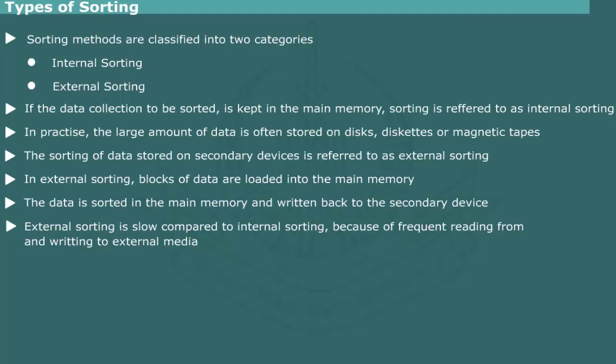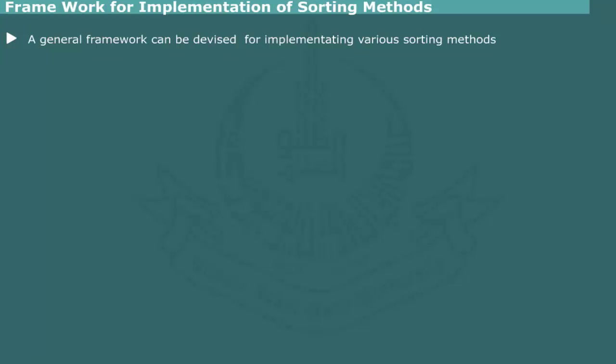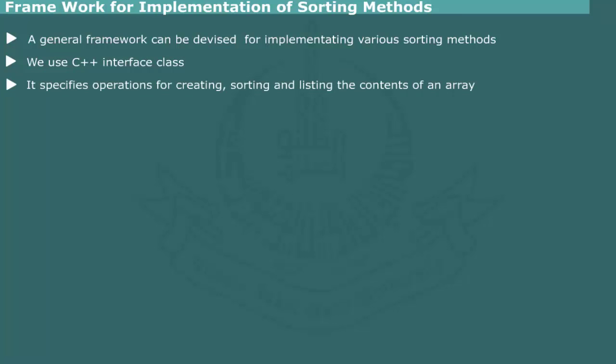External sorting is slow compared to internal sorting because data blocks have to be retrieved in a sequential order from the secondary device. By contrast, in internal sorting, any record can be directly accessed from the main memory. Before considering specific sorting algorithms, it is useful to devise a general framework for implementation. We shall use a C++ interface class to specify the operations for creating an array, performing sorting on the array, and listing the contents of the array.